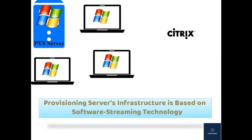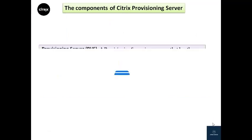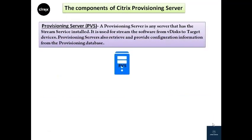Now we are going to see about the components of Citrix Provisioning Server. Provisioning servers retrieve and provide configuration information to and from the provisioning server database. Provisioning server architecture includes options to ensure high availability and load balancing the connections between target devices and their vDisks.